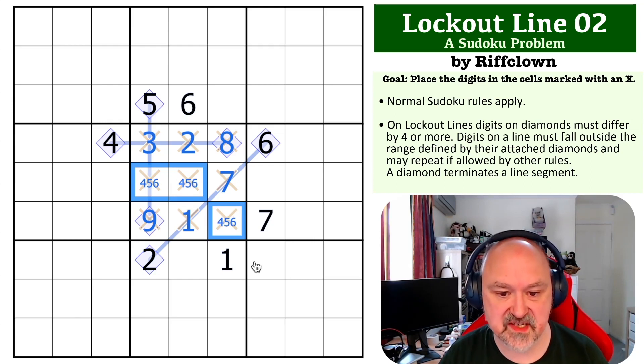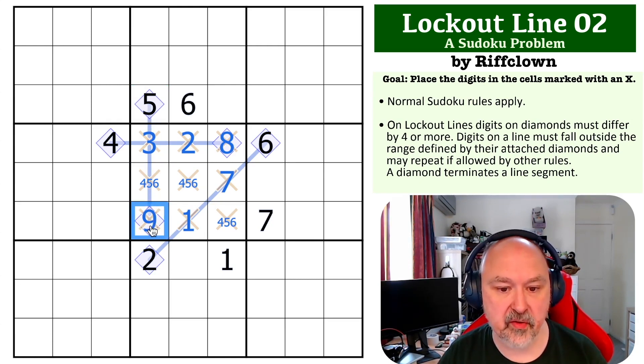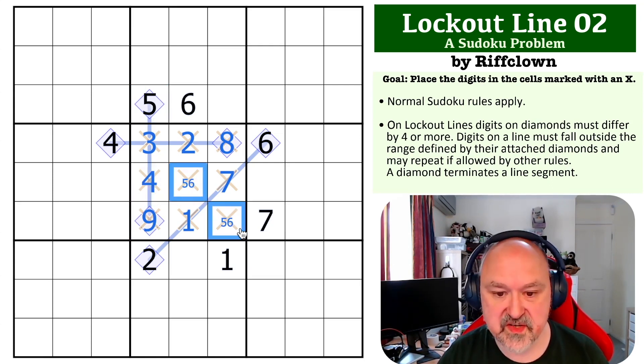We've only got three digits left, so we may as well put them in. We've got four, five, and six left. This can't be five or six because six is between five and nine and five is one of the digits. So this becomes the four, this becomes a five-six pair, and this six resolves it.